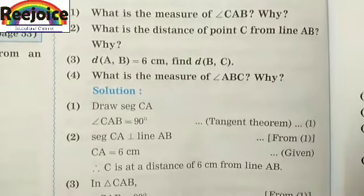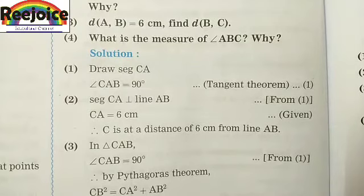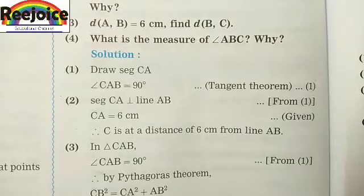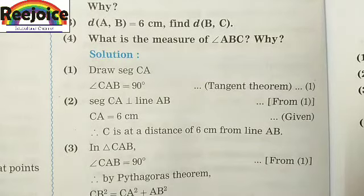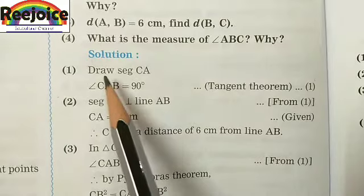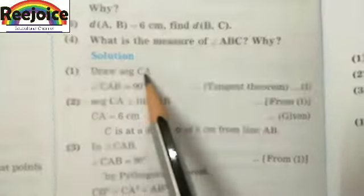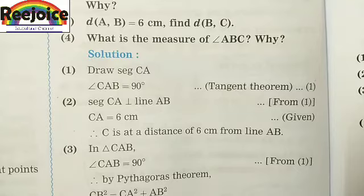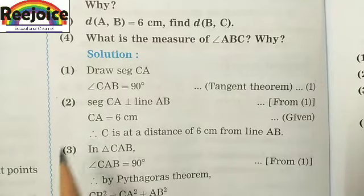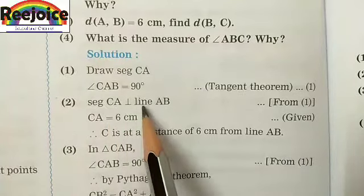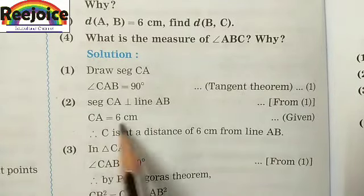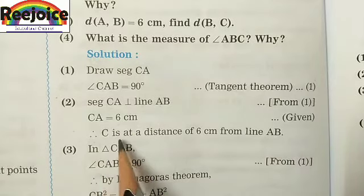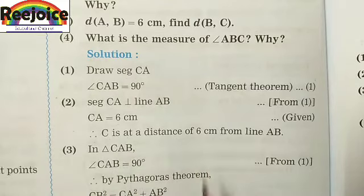Let's see the solution. Refer to the diagram on textbook page 55. For question (1), we have to draw CA, which is the radius. The angle CAB will be 90 degrees because the radius CA is perpendicular to the tangent AB. So angle CAB is 90 degrees. For question (2), segment CA is perpendicular to line AB and CA is equal to 6 cm. Therefore, point C is at a distance of 6 cm from line AB.